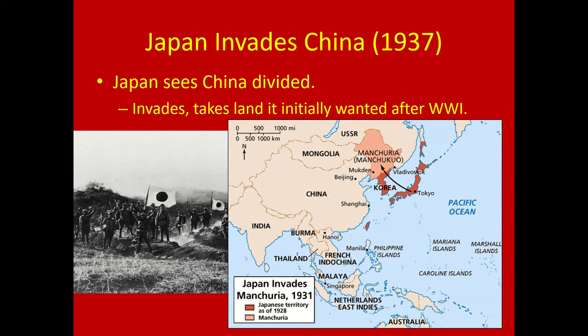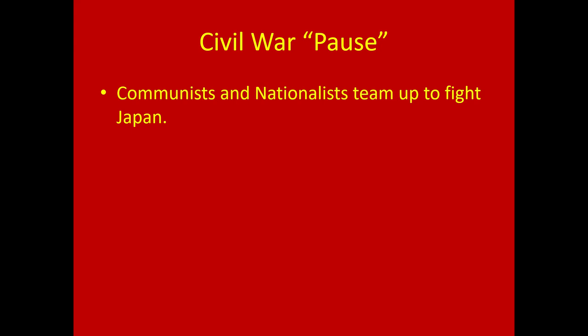Japan sees a lot of early victories and treats the Chinese it conquers absolutely horribly — viewing them as inferior, just infestations in land it wants for its own people. So what's the next logical step for the nationalists and communists? When Japan invades, they call a time-out on the civil war and team up to fight Japan. The communists and nationalists might hate each other, but they hate Japan more — the enemy of my enemy is my friend.